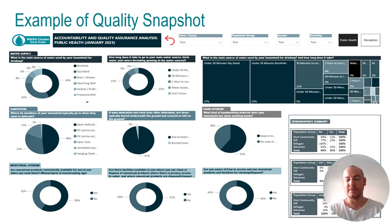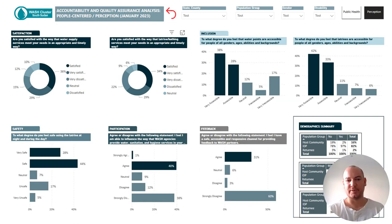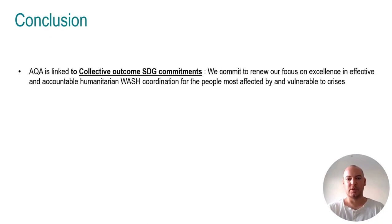This is an example of a quality snapshot which has been produced in South Sudan. It illustrates the different key quality indicators filled with quality data collected by implementing partners. You have water supply, sanitation, menstrual hygiene, and WASH. And you have the perception indicators including satisfaction and inclusion, safety, and feedback.